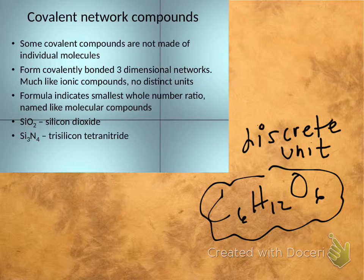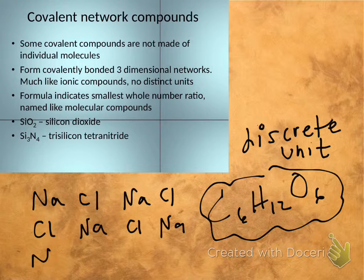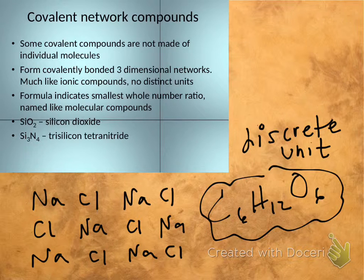And in ionic compounds, what do we have? We don't have molecules, we don't have discrete units. Describe what an ionic compound looks like at an atomic level. It's not molecules, right? It's this whole big sort of scaffolding.